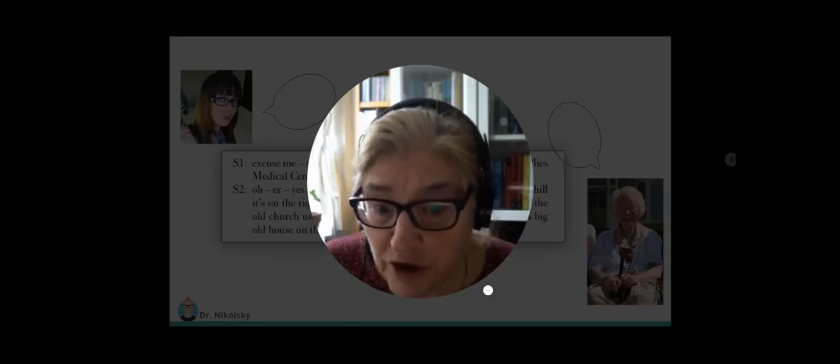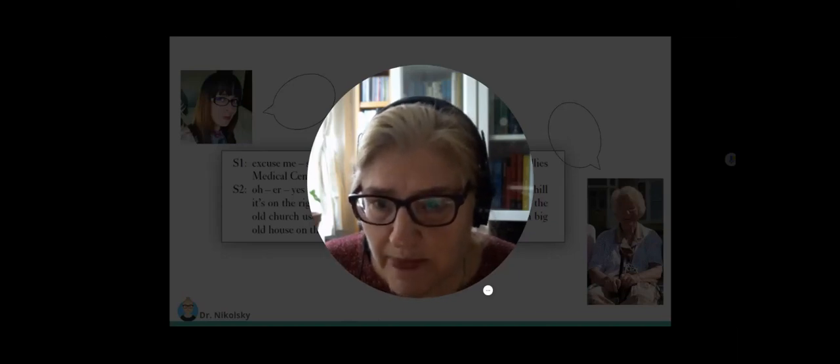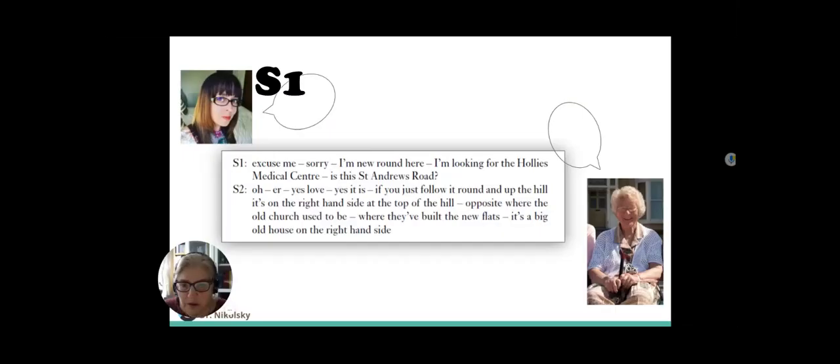In this dialogue, Gavins quotes this following example to exhibit how easily miscommunication can creep in even the simplest face-to-face exchange. She herself is speaker 1 in this dialogue, S1. S1: Excuse me, sorry, I'm new round here. I'm looking for the Holly's Medical Center. Is this St. Andrew's Road? S2: Oh, er, yes love, yes it is. If you just follow it round and up the hill, it's on the right-hand side at the top of the hill, opposite where the old church used to be, where they've built the new flats. It's a big old house on the right-hand side.